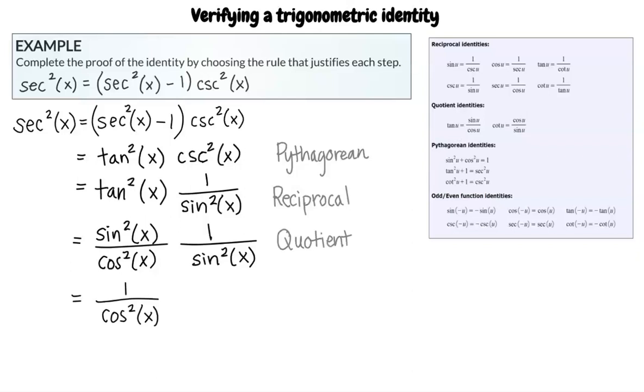Now, step 4 is achieved through algebraic manipulation. The sine squared of x term in the numerator of the first fraction cancels with the sine squared of x term in the denominator of the second fraction, simplifying to 1 over cosine squared of x. So, the rule you would input for step 4 is algebra.